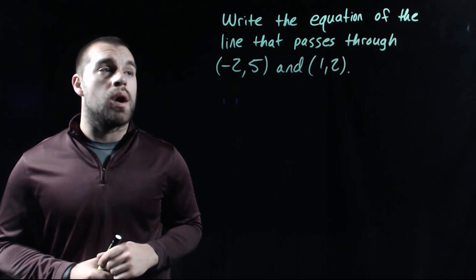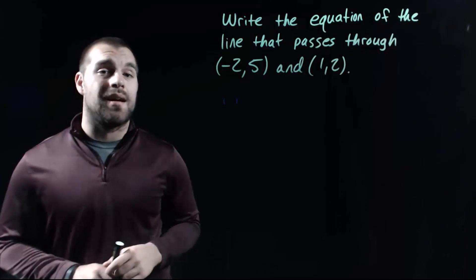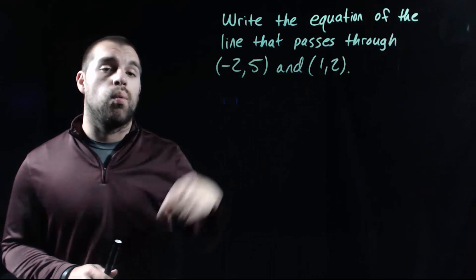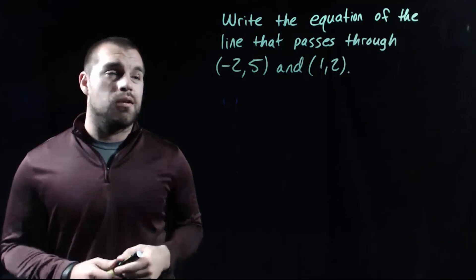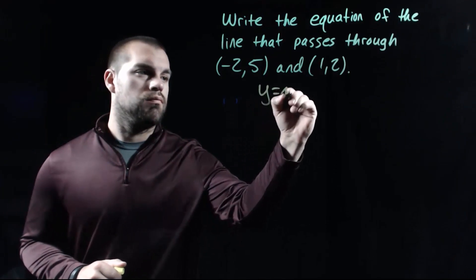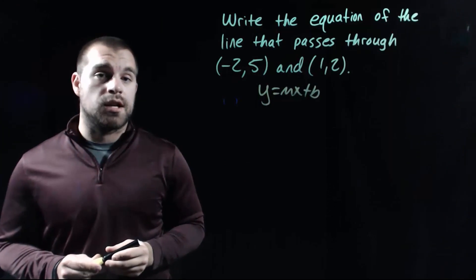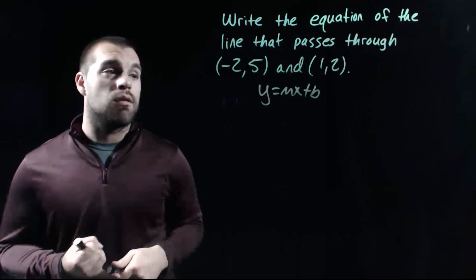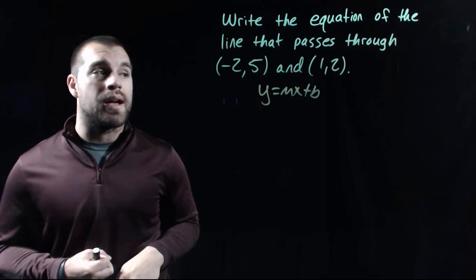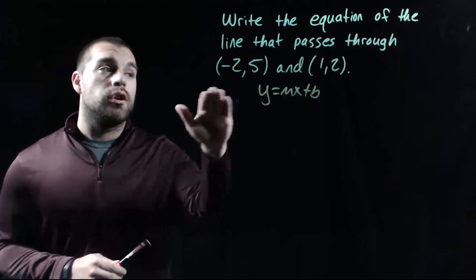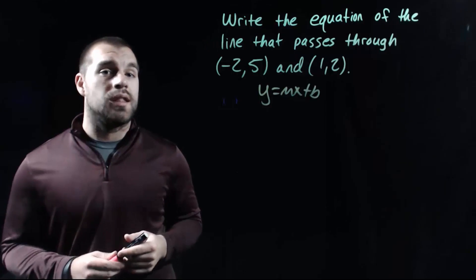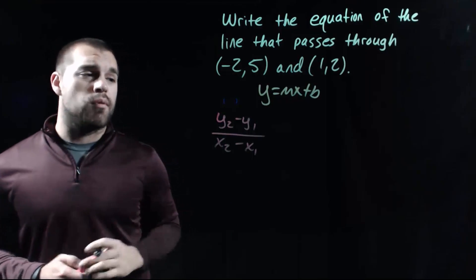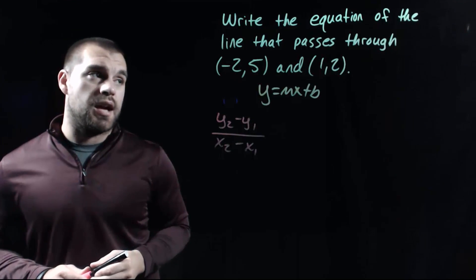The next thing we're going to look at is writing out the equation of a line based on a couple of points. In this example, we're given the points negative 2, 5 and 1, 2, and we're going to write out a slope-intercept equation — y equals mx plus b. We need to figure out the slope and the y-intercept. We can find the slope using the slope formula: y2 minus y1 over x2 minus x1.